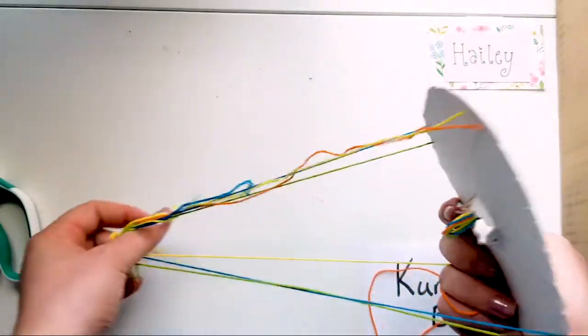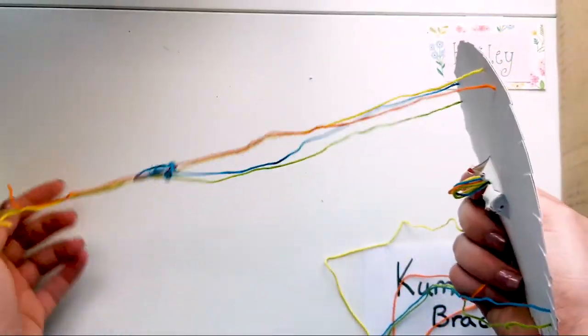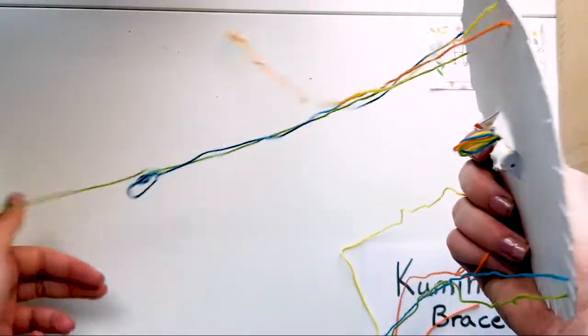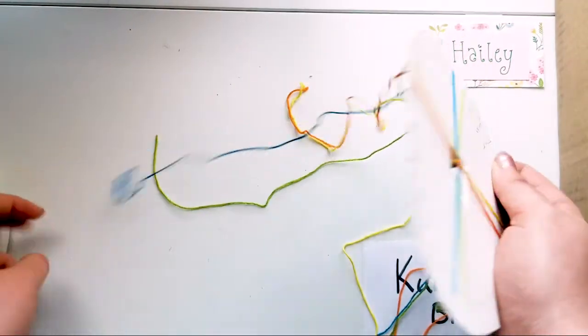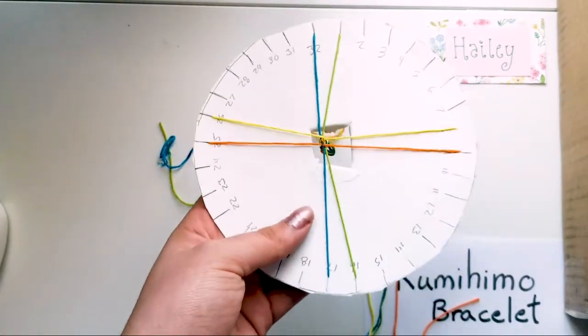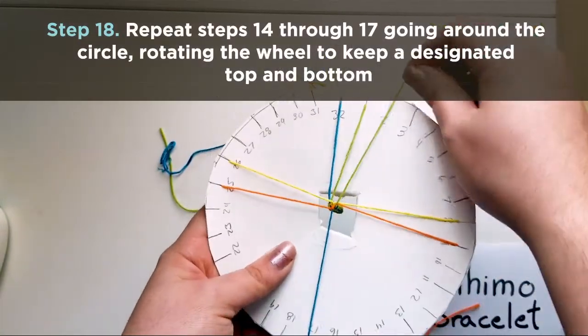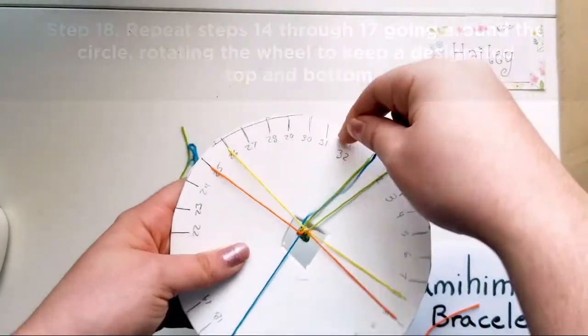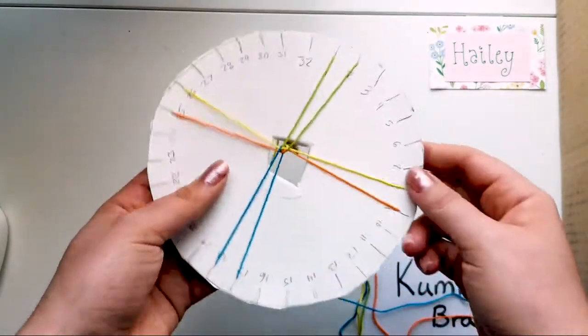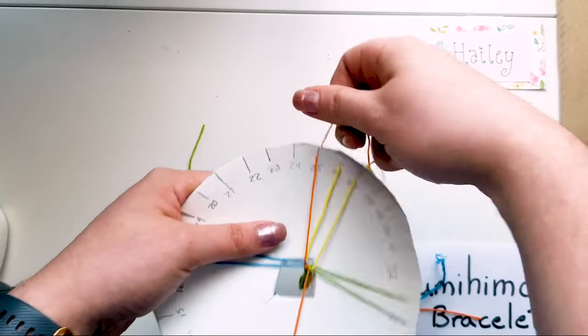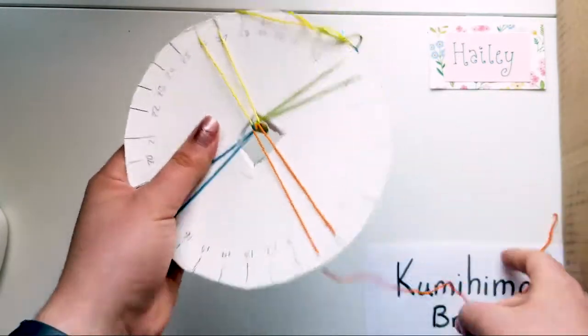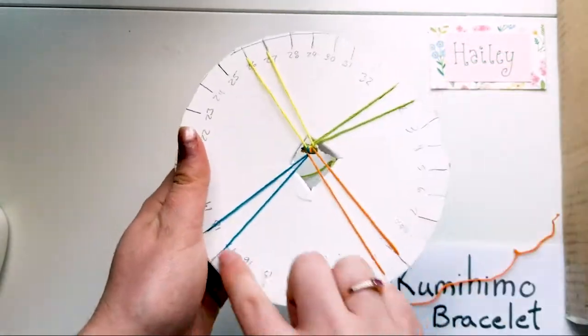So as you can see, my strings are already getting a little twisted. Just kind of run your fingers through them, detangle them. If you do it every once in a while, it never really gets that bad. And basically, that's it. You just kind of keep going. Low to high. You just always want to keep yourself working in the same direction around the circle. So you're always going to keep going this way.